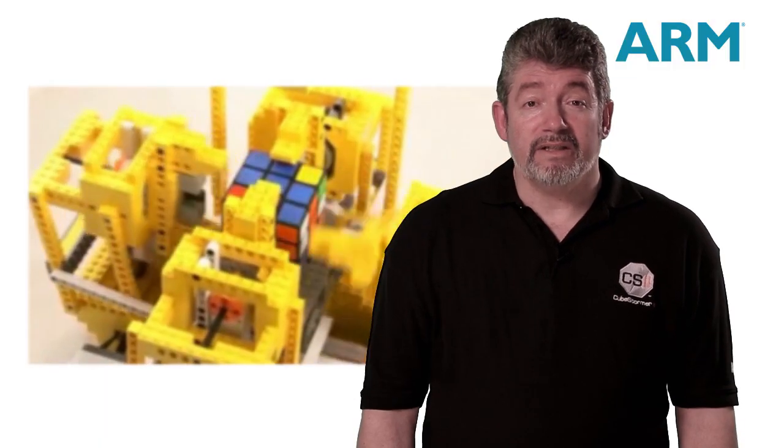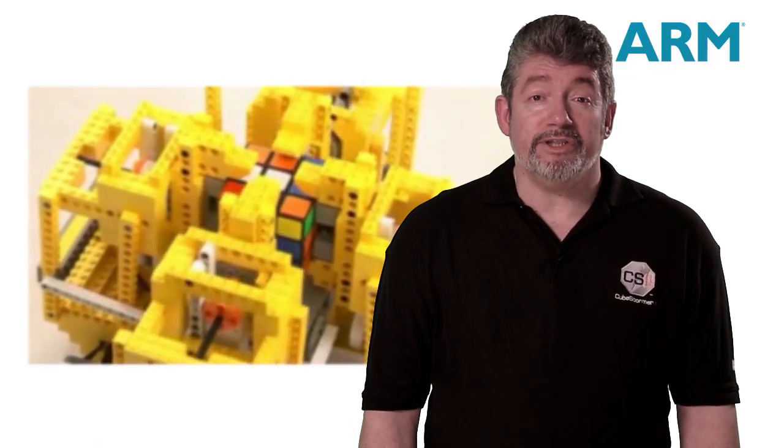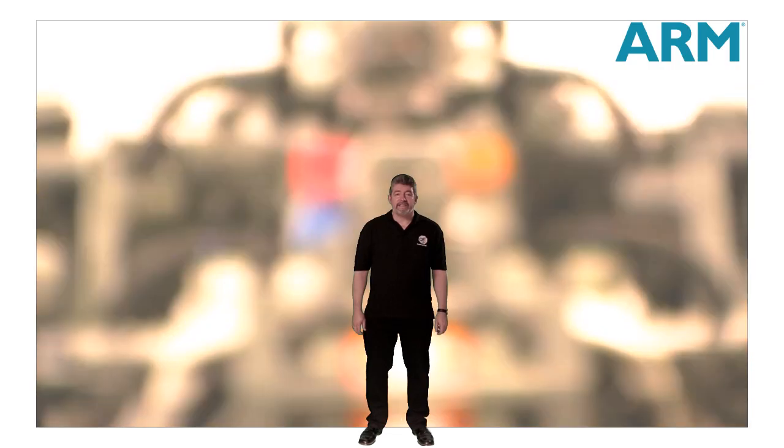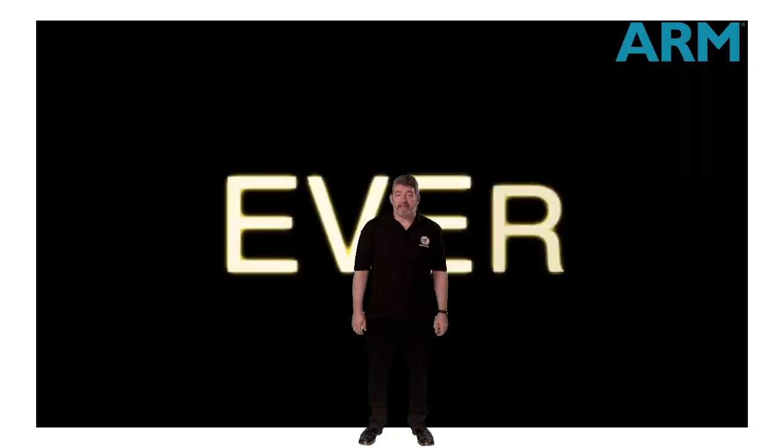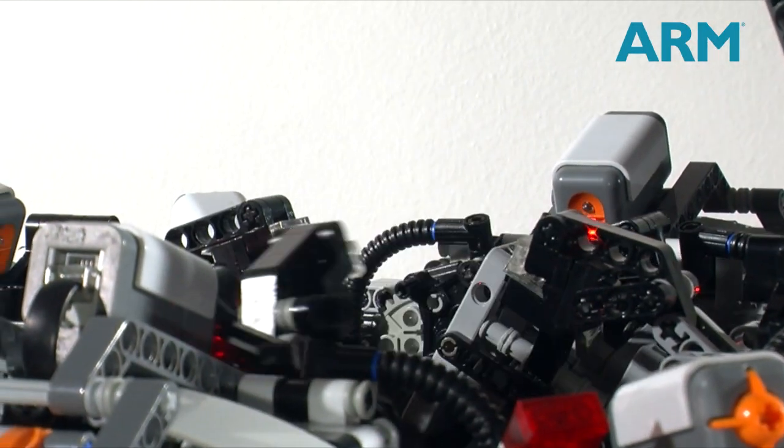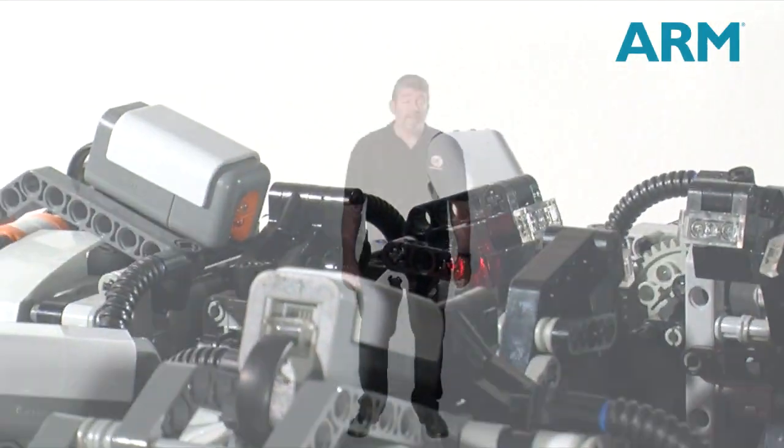The robots we were working on, Mike's Cubestormer and my Speedcuber, both became very popular on YouTube. Following this success, we both started designing faster robots. Mike's strengths lie mainly in the mechanical design and mine are more in software. So we decided to join forces and design an even faster robot together. This was the start of Cubestormer 2.